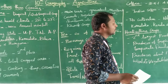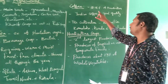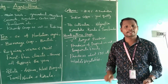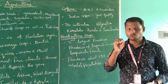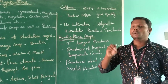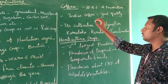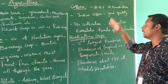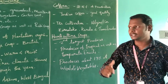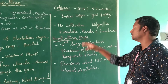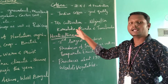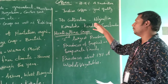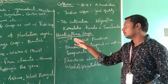Coffee is the fourth crop. India produces 3.5 percent of the world's coffee production. Indian coffee is known for its good quality throughout the world. The good quality coffee is cultivated in the Nilgiris, Karnataka, Kerala, and Tamil Nadu, along with various other places.